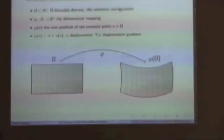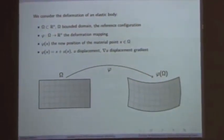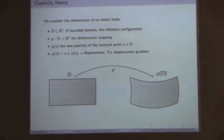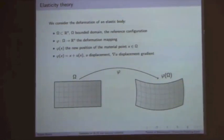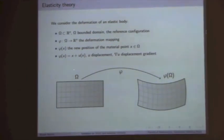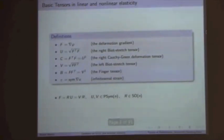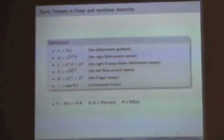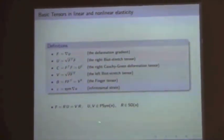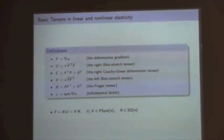I begin with some basic definitions and the general setting of elasticity theory. We have some body omega in a reference configuration, modeled as a bounded domain in R^n. We have a mapping of omega to R^n called the deformation mapping, which maps a point x to its position in the deformed configuration phi of x. We can decompose phi of x into x plus u of x. We call u the displacement and the gradient of u the displacement gradient. We also use the notation u and v for the right and left Biot stretch tensor.